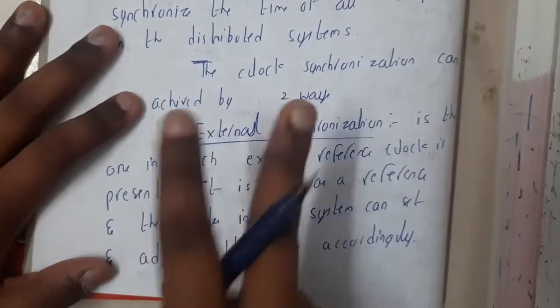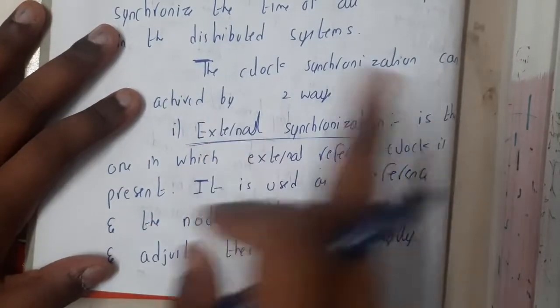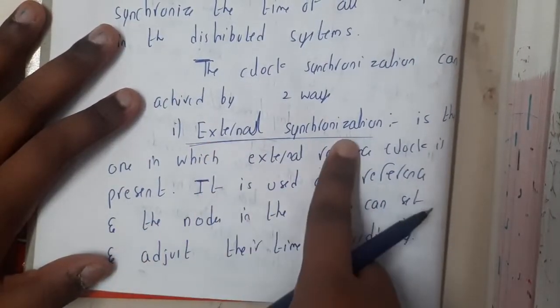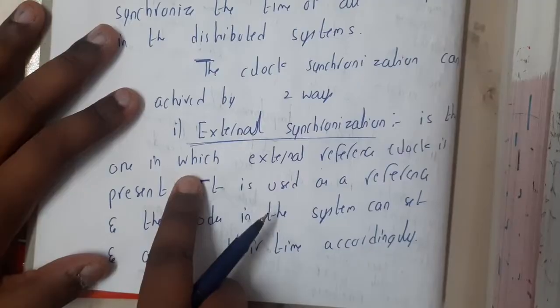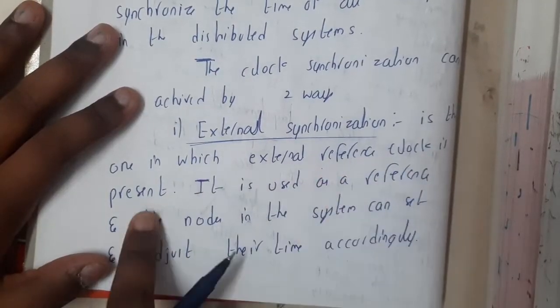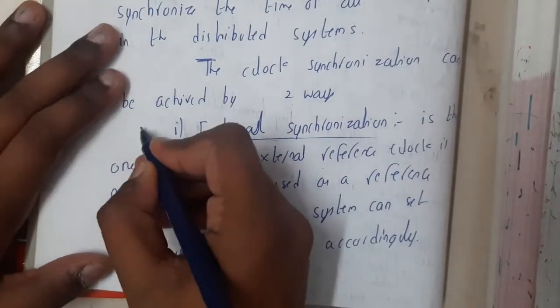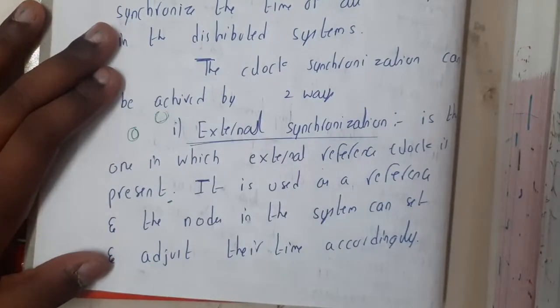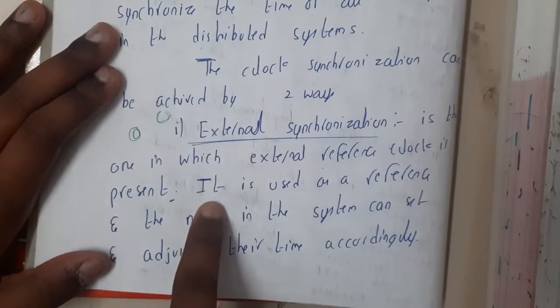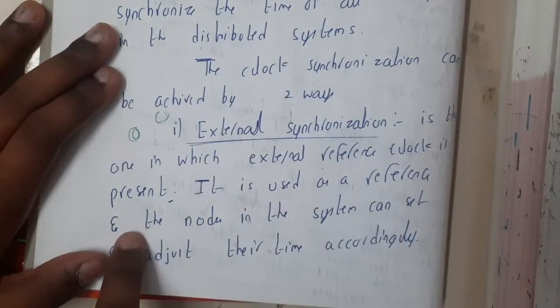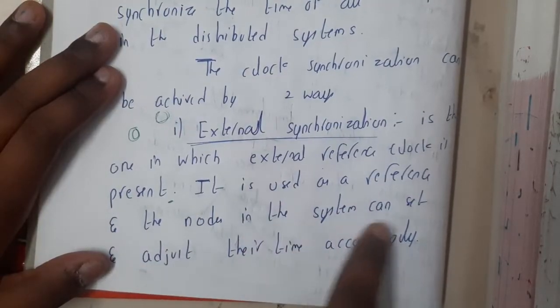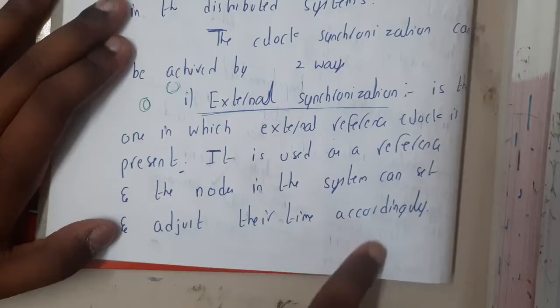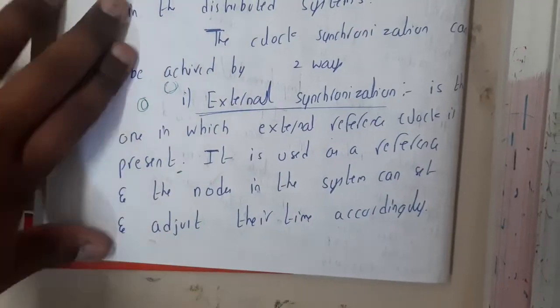Clock synchronization can be achieved in two ways. One is external and the other is internal. External synchronization is one in which an external reference clock is present. You will not use your system clock or physical clock. You will be using some other external clock to synchronize. It is used as a reference and the nodes in the system can set and adjust their times accordingly.